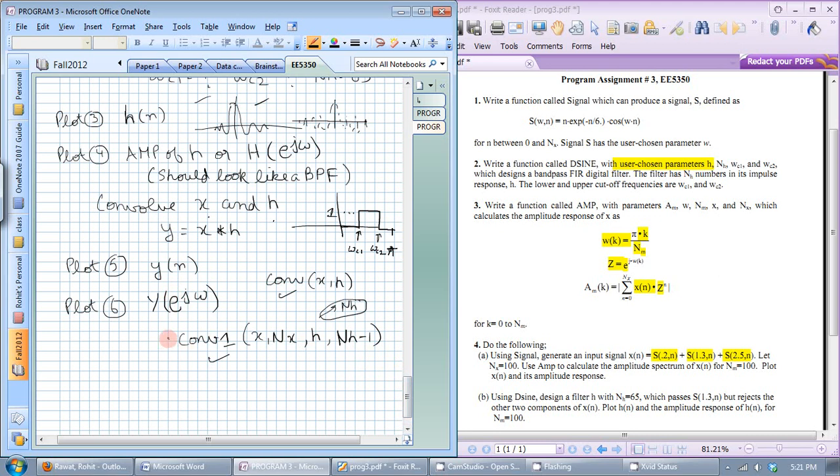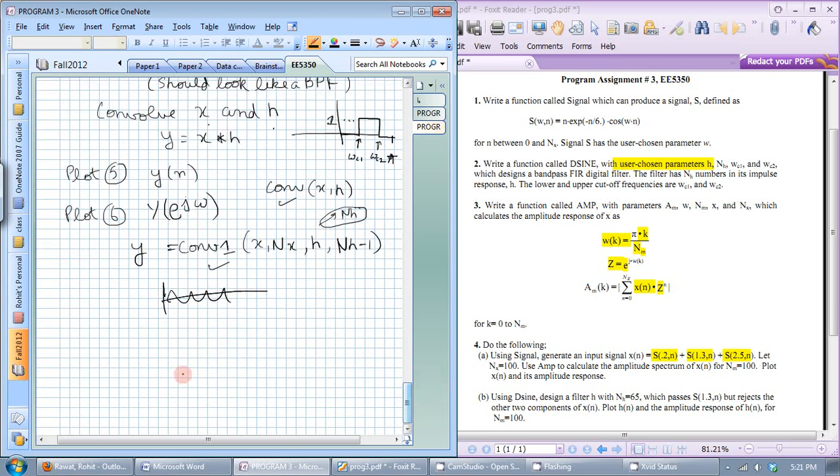So it will produce your signal y and again it wouldn't have a specific shape it will kind of look random but when you plot the frequency response you should only see the middle peak. So it should be something close to that.